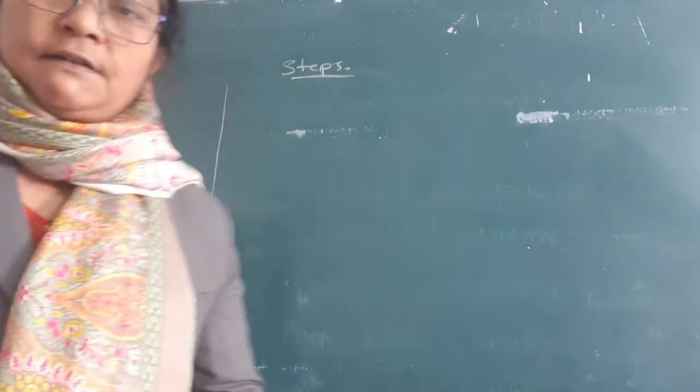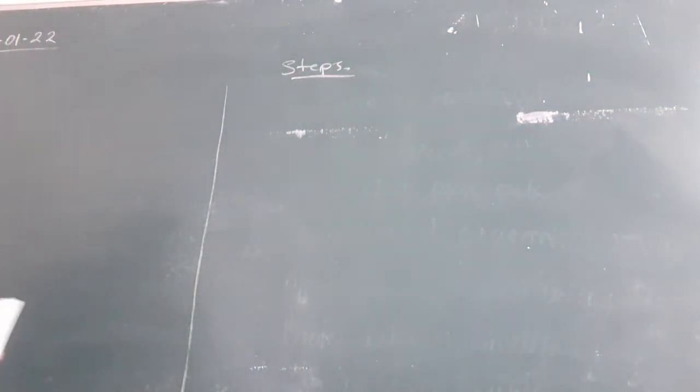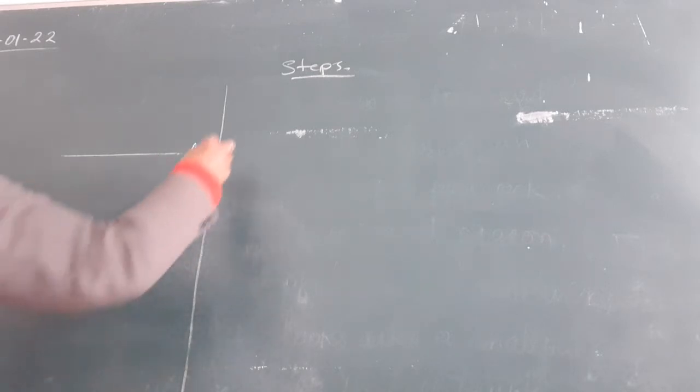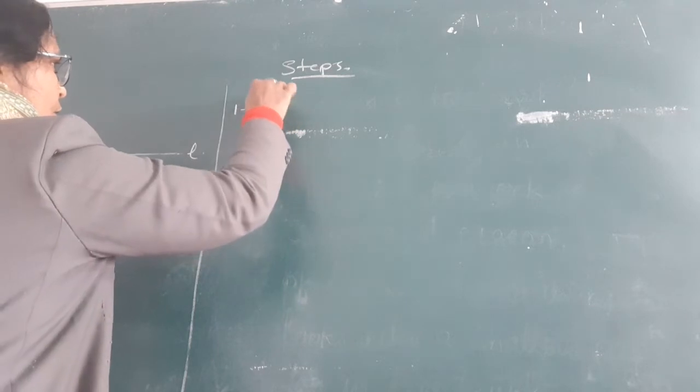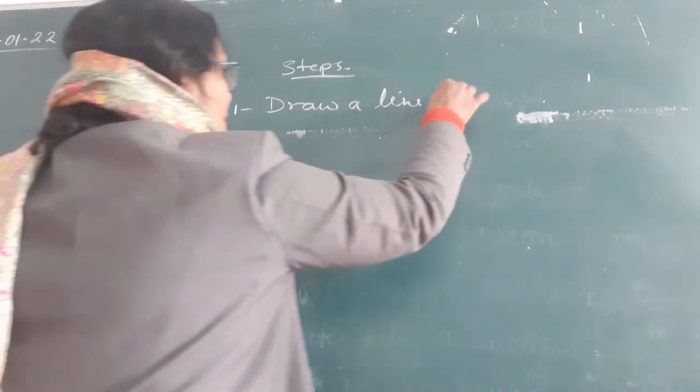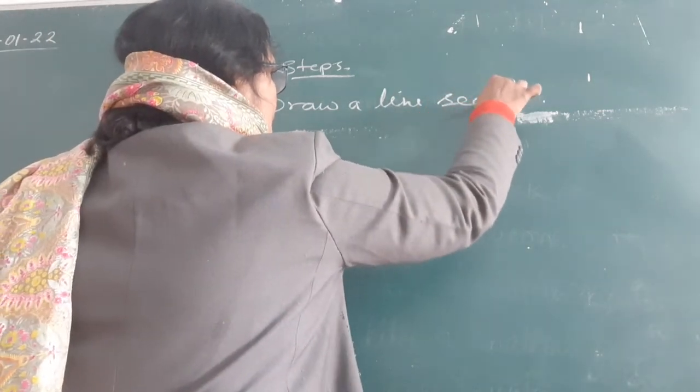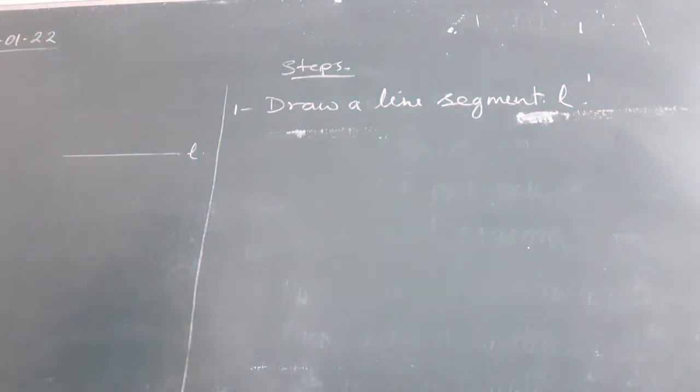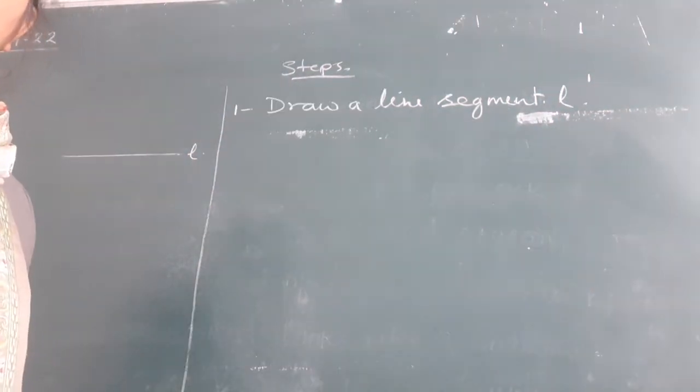Now, first, we will draw a line segment. So, you can draw a line segment of any measurement. You can draw one line and mark it as L. This is line segment L. And also, you have to write steps. Draw a line segment L. Then, this is the first step.